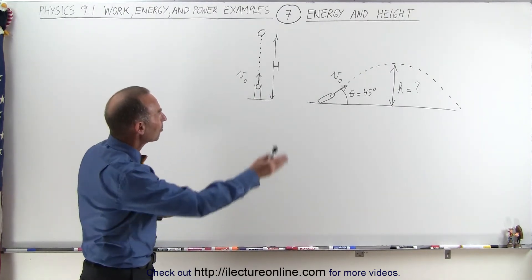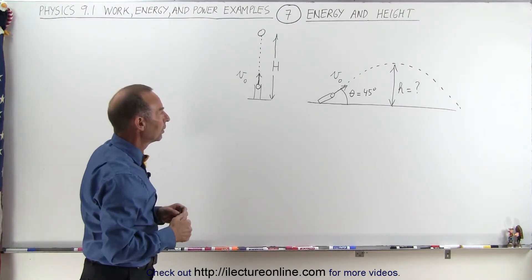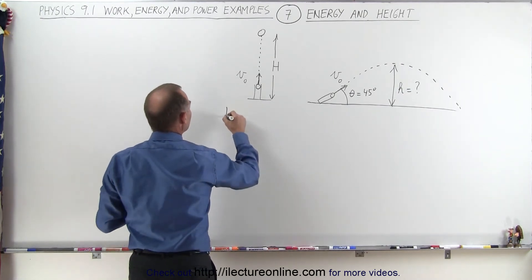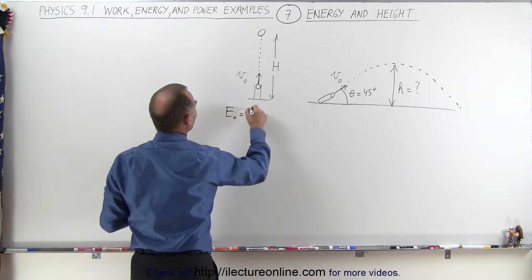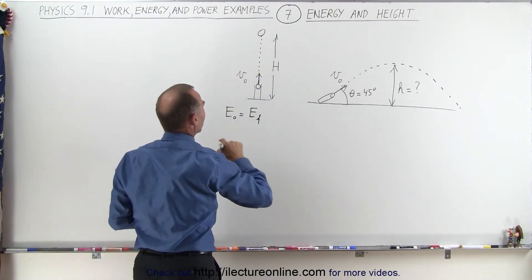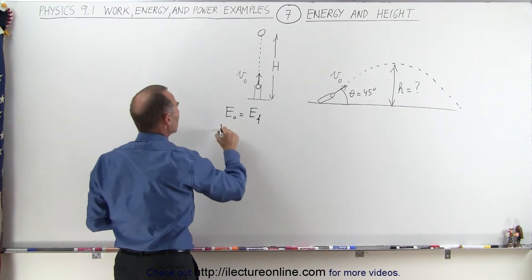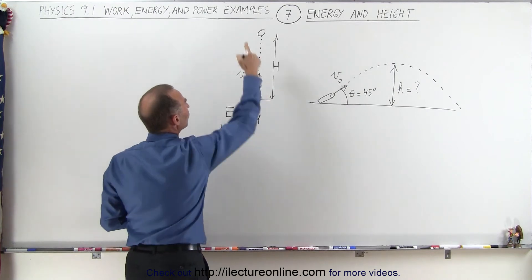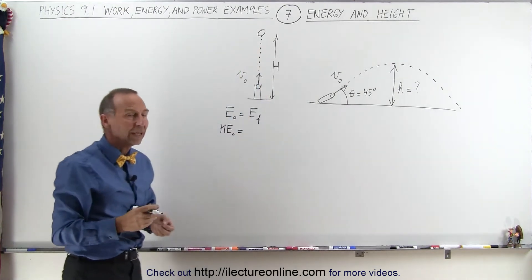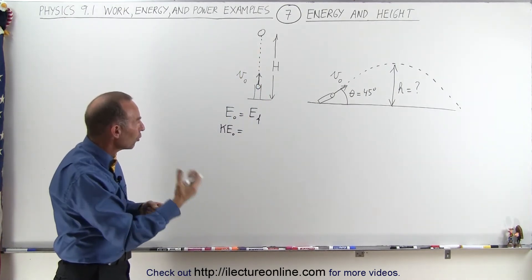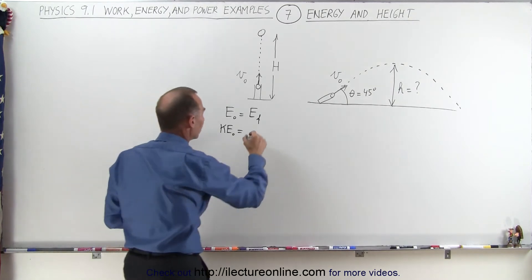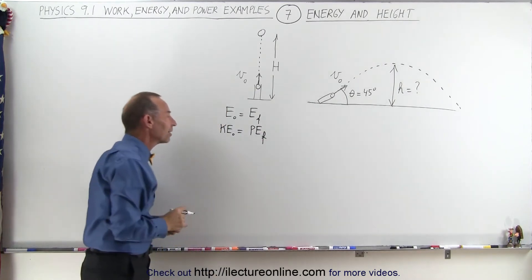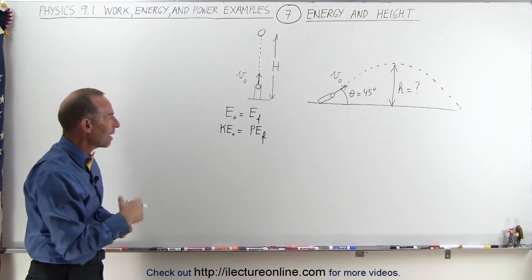How does that small h compare to the big H? We're going to start with the equation that the initial energy must equal the final energy when it gets to the top. The initial energy would be initial kinetic energy because it has no height but it has maximum velocity, and when it reaches maximum height the velocity is zero so there's no kinetic energy but there will be maximum potential energy. So all of its initial kinetic energy will convert to its final potential energy when it reaches the maximum height.